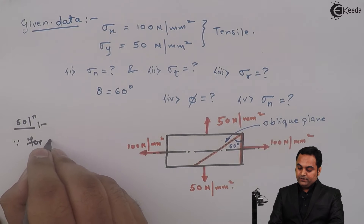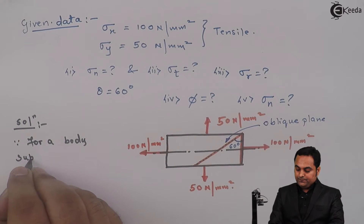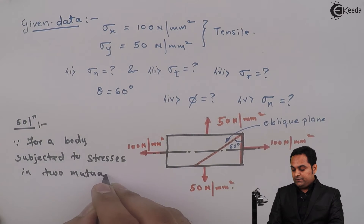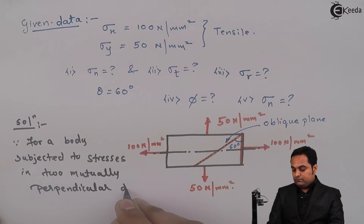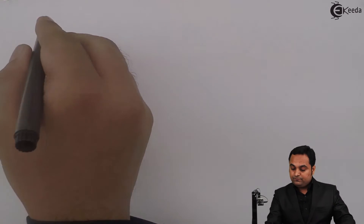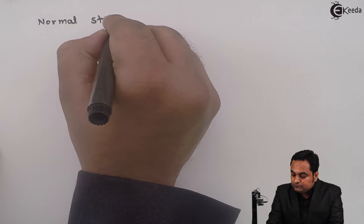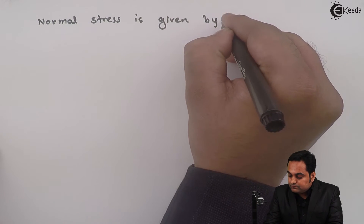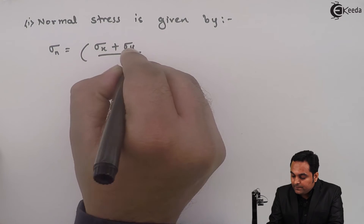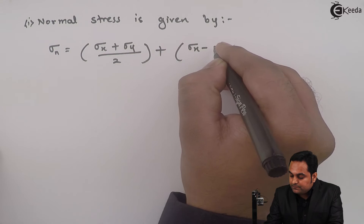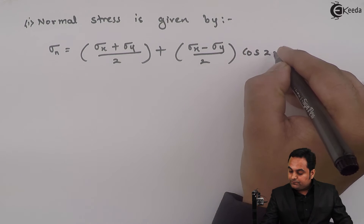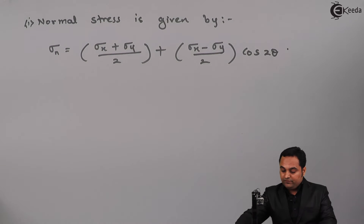Once we know the diagram, we can directly start with the solution. For a body subjected to stresses in two mutually perpendicular directions, the normal stress formula is: Sigma N = (Sigma X + Sigma Y) / 2 + (Sigma X − Sigma Y) / 2 × cos 2θ.